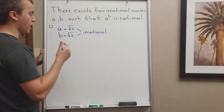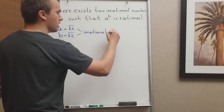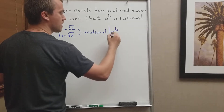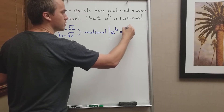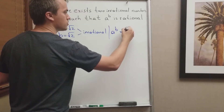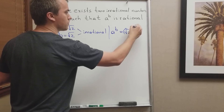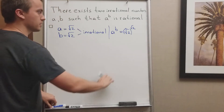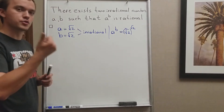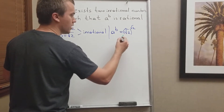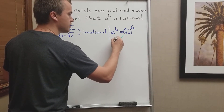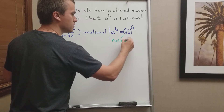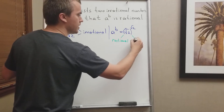Then what I'm going to do, I'm going to consider a to the power of b, where a to the power of b is square root of 2 to the power of square root of 2. And for this expression, I have two cases. The first one is going to be either rational, or this expression is going to be irrational.